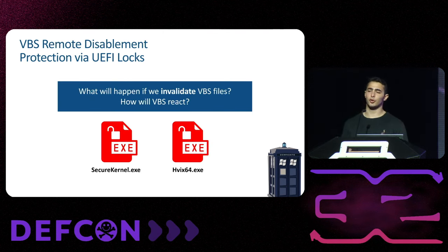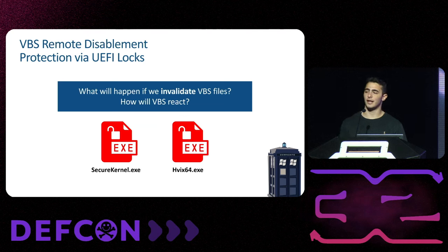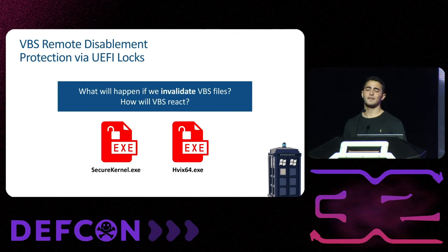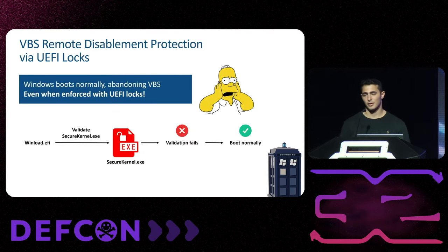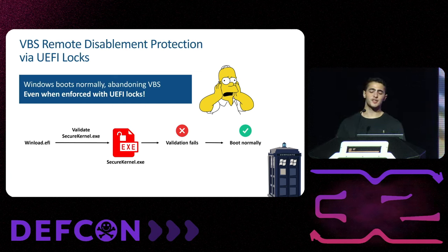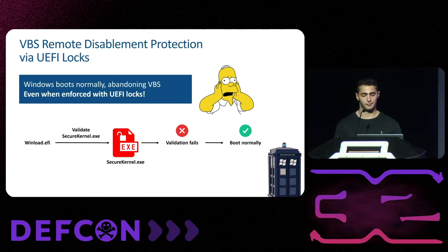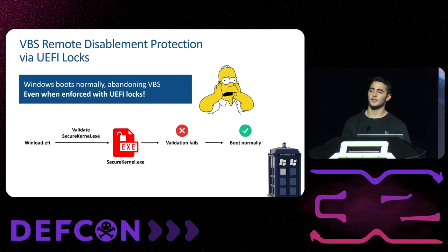With the ability to control any file on the OS, I wondered what would happen if I replaced the secure kernel or hypervisor powering VBS with invalid files — for example, files that are not digitally signed or are attacker-controlled. I expected the machine would boot into recovery as invalid files are a sign of compromise. Instead, I was extremely surprised to find that if the OS loader fails to validate one of VBS's files, it just boots normally — abandoning VBS. This can be used to disable VBS by bypassing the UEFI lock. All we need to do is replace the secure kernel, hypervisor, or any VBS files with invalid files. As far as I know, this is the first bypass of VBS's UEFI lock.